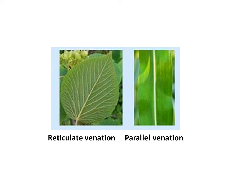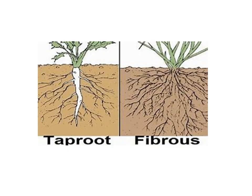Here I have included figures of the tap root system and the fibrous root system. The tap root system can be seen in the mustard plant, and the fibrous root system can be seen in rice.